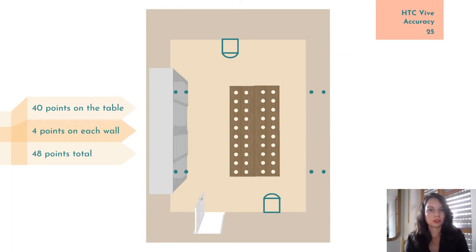So, now let's see how our ground-truth system performs. First, we want to evaluate the accuracy of the HTC Vive. We marked 48 points inside the room, out of which 40 were placed on a grid on a table, and 8 points were marked on two walls.